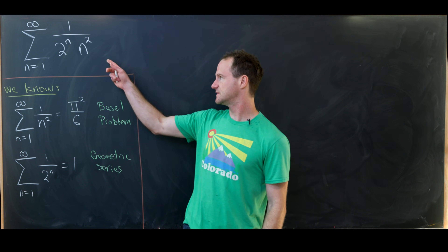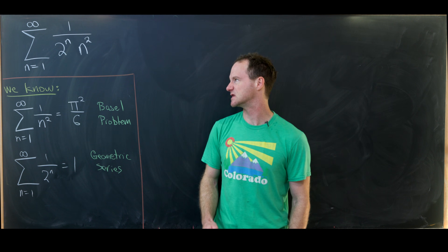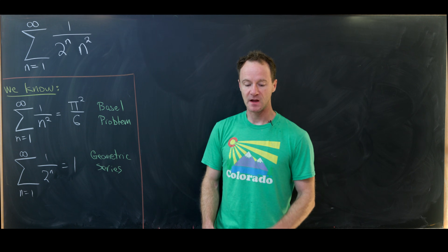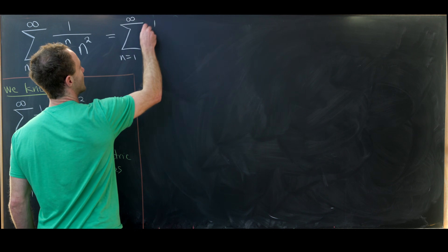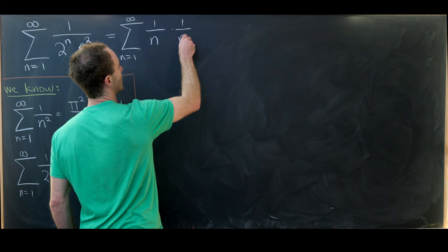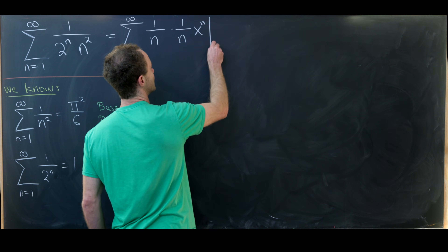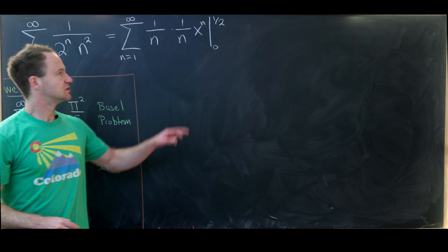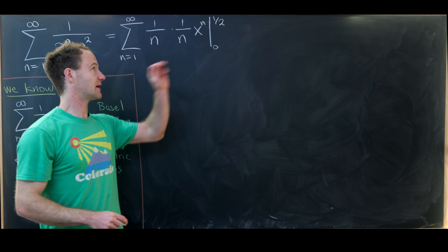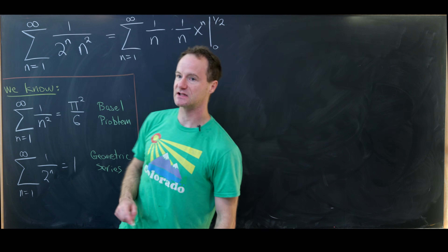Since we know these two it seems like it maybe shouldn't be too hard to get at the value of this seemingly related series, but as we'll see it's a little bit more complicated. The first thing I'll do is split this up: I'm going to write this as the sum as n goes from 1 to infinity of 1 over n times 1 over n times x to the n, where I've evaluated x to the n from 0 to 1 half. If I plug in 0 I get 0; if I plug in one half I get 1 over 2 to the n, which is exactly what I started with.